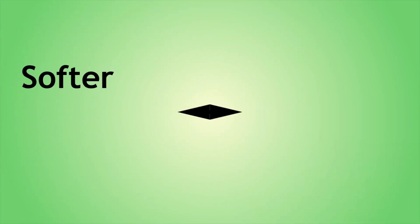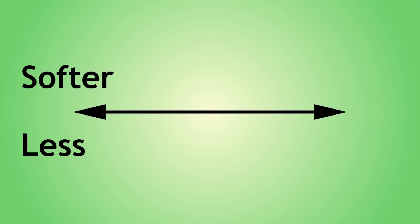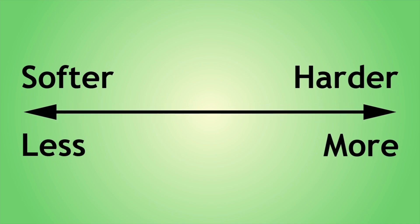Softer and easier to spread margarine is less hydrogenated, whereas harder margarine is more hydrogenated.